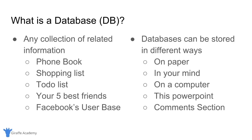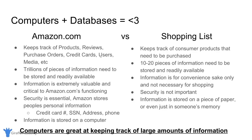A database is a collection of related information that can be stored in different ways. Now I want to walk you through more specifically what we can do with databases on a computer. Computers are actually great for storing databases. Here I have two examples: Amazon versus a shopping list. Amazon stores products, reviews, purchase orders, credit cards, users, media — trillions of pieces of information. A shopping list keeps track of consumer products to purchase — maybe 10 to 20 pieces of information. Storing a collection of related information on a computer is extremely useful.